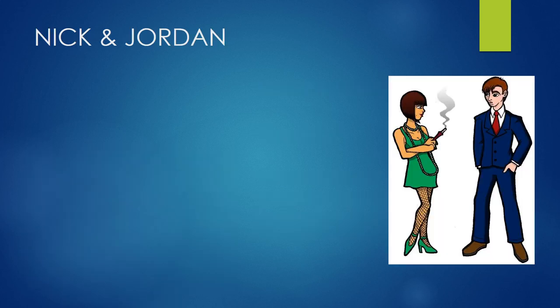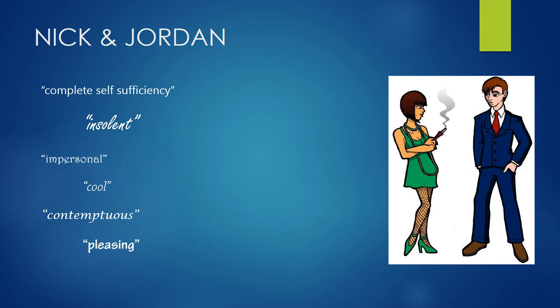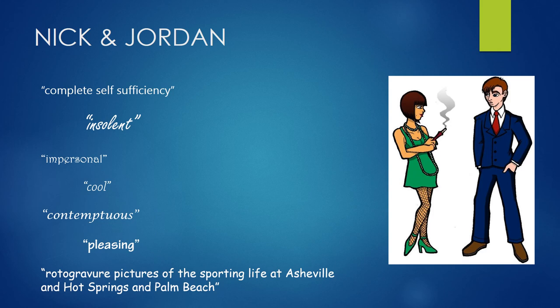Then we have Nick and Jordan. Nick is first attracted to Jordan because of her complete self-containment, self-control, and the emotional distance she projects. He approves of her complete self-sufficiency on page 14 and her emotional aloofness appeals to him. Nick uses words in Chapter 1 such as insolent, impersonal, cool, and contemptuous to describe what he considers the pleasing expression on Jordan's face. He remains interested in Jordan as long as she appears to belong to a faraway world — resorts at Asheville, Hot Springs, and Palm Beach — places untouched by emotions, page 23.